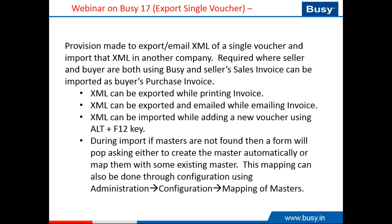Another scenario is when you have branches at various locations and you send goods from one location to another. In that case also you can implement this feature. For example, the head office transfers goods to the Jaipur branch — the head office puts a sale voucher and the branch puts a purchase voucher to manage branch accounting. The automation of loading line items can also be done, and we will see the implementation of all these things.